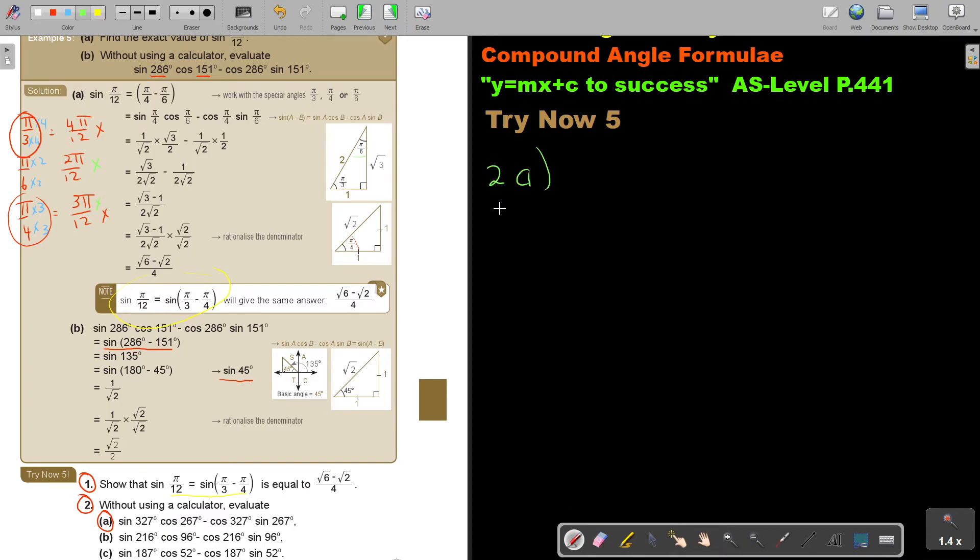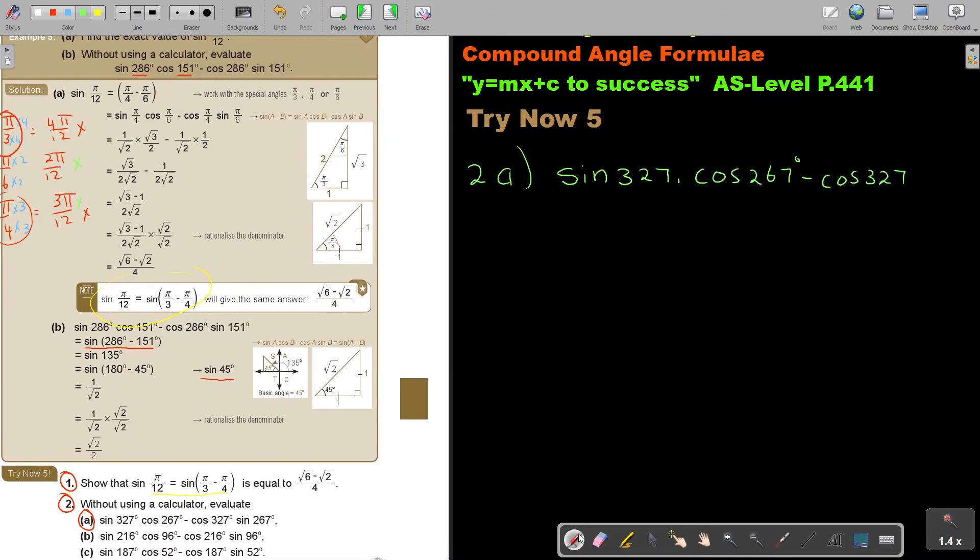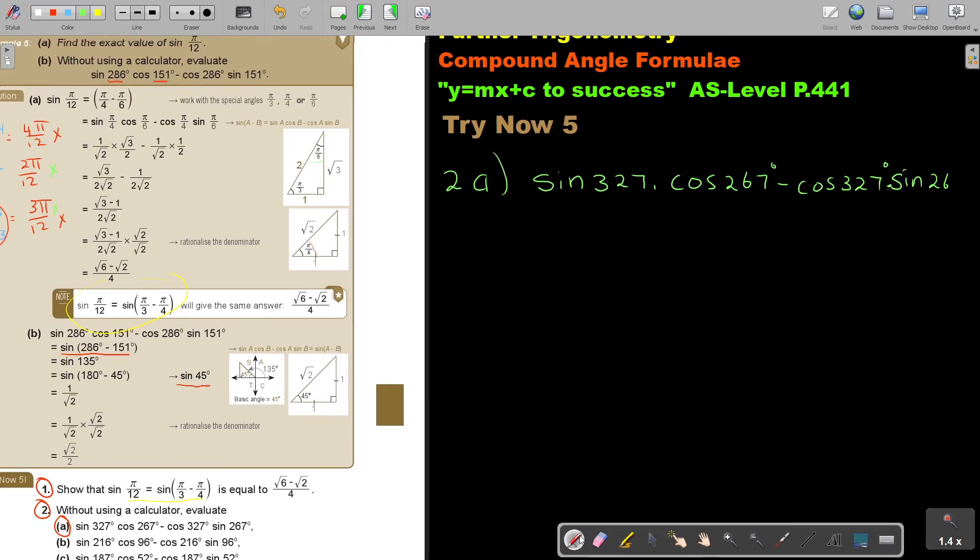So number 2a, without using a calculator, evaluate. Let's just first write. And this is almost like I said, the reverse. Don't forget, you have to be very good in chapter 4, trigonometry, basic. And then sin 267.